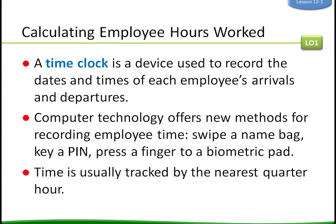To calculate employee hours worked, we use a time clock — a device used to record the dates and times of each employee's arrivals and departures. My first job was in a restaurant; we had pieces of paper that we slid into a time clock that stamped the time and date when I arrived and when I left. Computer technology now offers new methods for recording employee time: you can swipe your name badge, key in a PIN number, press a finger to a biometric pad, or log into a computer. Time is usually tracked to the nearest quarter hour.